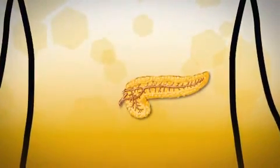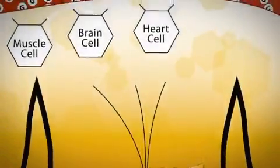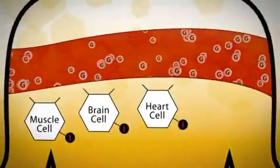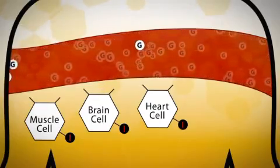As glucose moves through our bloodstream, our pancreas produces a hormone called insulin. Insulin is the gatekeeper of our cells. It opens the door, allowing glucose to enter and be used for our energy needs. Without it, our cells can't be fed.